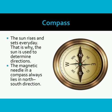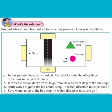Do you know, the sun rises and sets every day. That is why the sun is used to determine directions. The magnetic needle in a compass always lies in the north-south direction. Now, let's solve this. In this picture, the east is marked. Use that to write the other three directions in the yellow boxes.